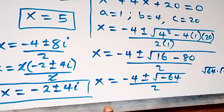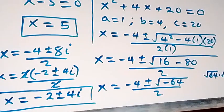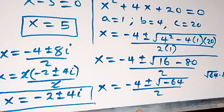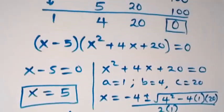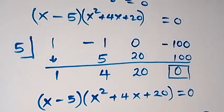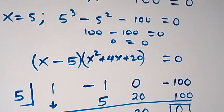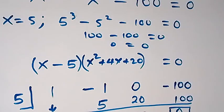Altogether we have three solutions: the real solution x equals 5, and the two complex solutions x equals minus 2 plus 4i, and x equals minus 2 minus 4i. Thank you for watching — don't forget to subscribe to my channel and turn on notifications. See you next class, bye for now.